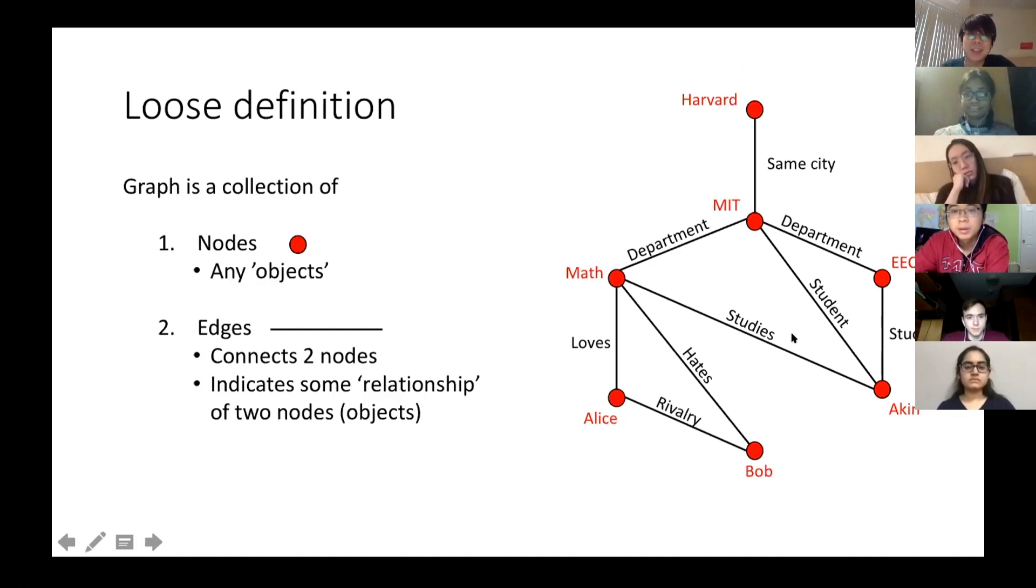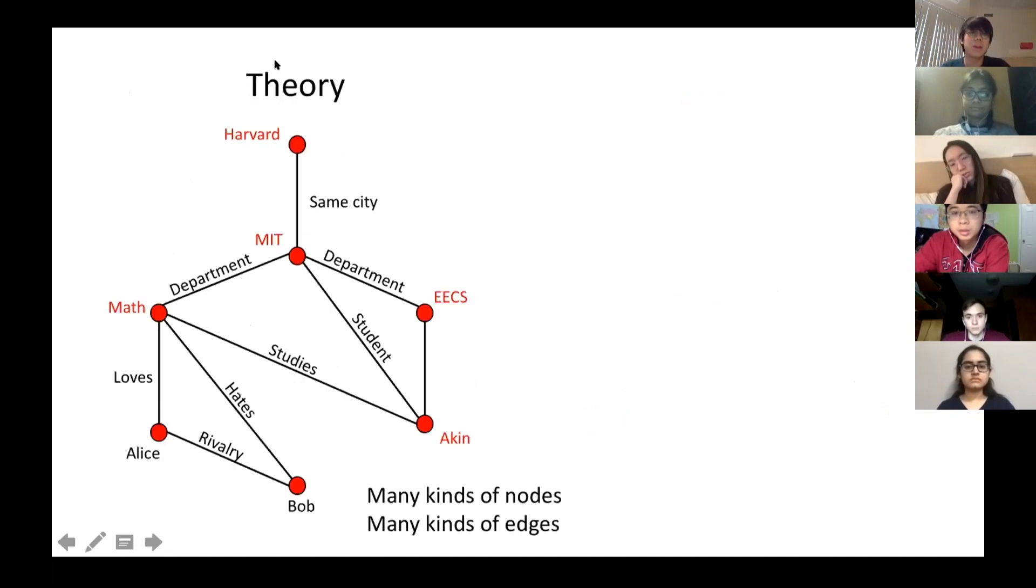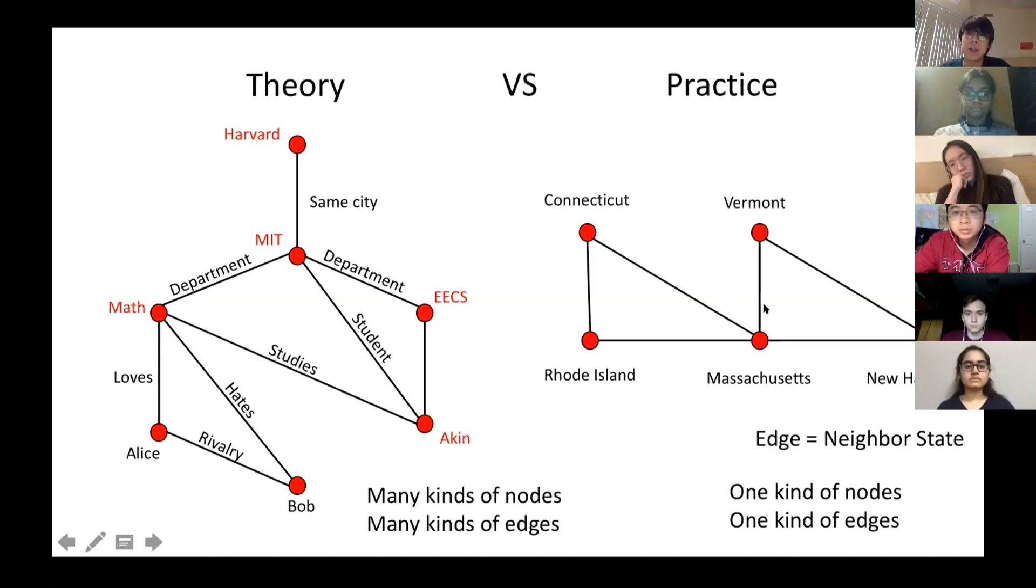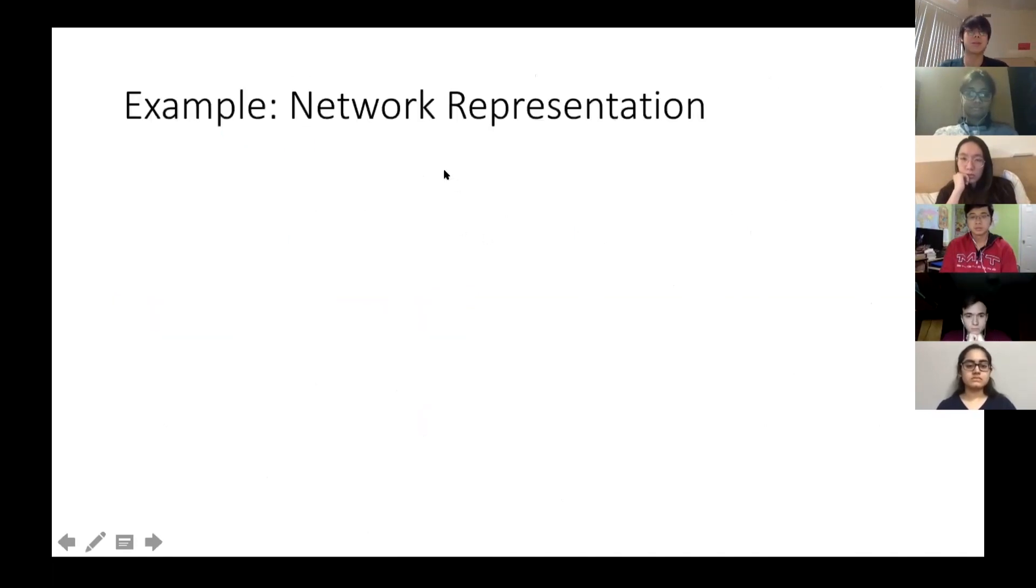I would like to make some notes here. This graph is actually quite messy. It has like so many kinds of nodes: you have schools, you have departments, and you also have people. At the same time, you also have so many kind of edges: same city, department, students, and many more. In theory, this is not wrong. In one graph, you can have so many kind of nodes and so many kind of edges. But in practice, we usually refer to a graph as only having one kind of nodes and one kind of edges. If you take a look at the right graph, you can see this graph has nodes that are the states in New England, and the edges indicate if two states are neighboring.